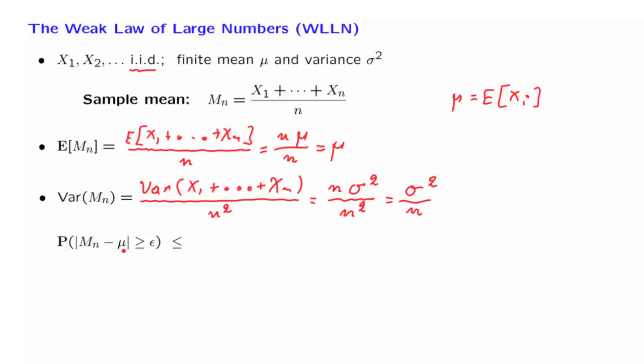We are now in a position to apply the Chebyshev inequality. The Chebyshev inequality tells us that the distance of a random variable from its mean being larger than a certain number has a probability that's bounded above by the variance of the random variable of interest divided by the square of the number that we have here. We have already calculated the variance. And so this quantity is sigma squared over n times epsilon squared.